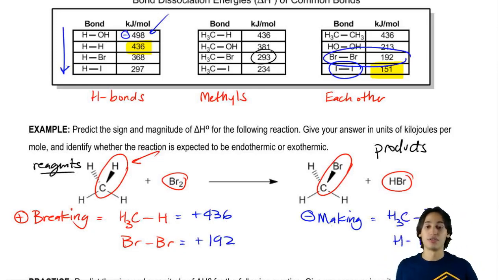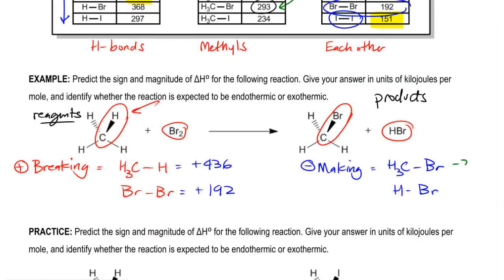Then on the negative side, or on the making side, C-Br is going to be right here. That's going to be 293, so I'm going to give that a negative 293. And then H-Br is going to be negative 368.